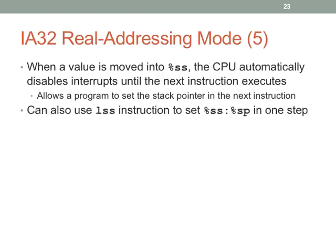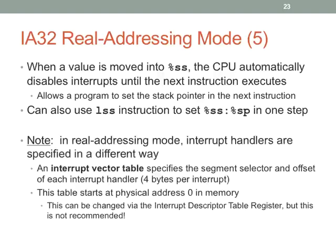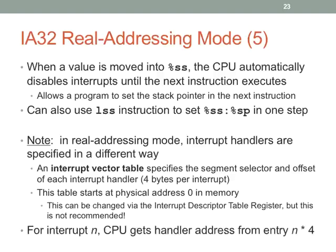The real mode interrupt table is different from the protected mode interrupt table. A common mistake is accidentally loading program data over the interrupt vector table, which causes BIOS interrupt calls to fail. Typically you won't modify the interrupt vector table in your bootloader — you just use it. When you transfer to your own program in 32-bit mode, you need to set up the interrupt descriptor table.